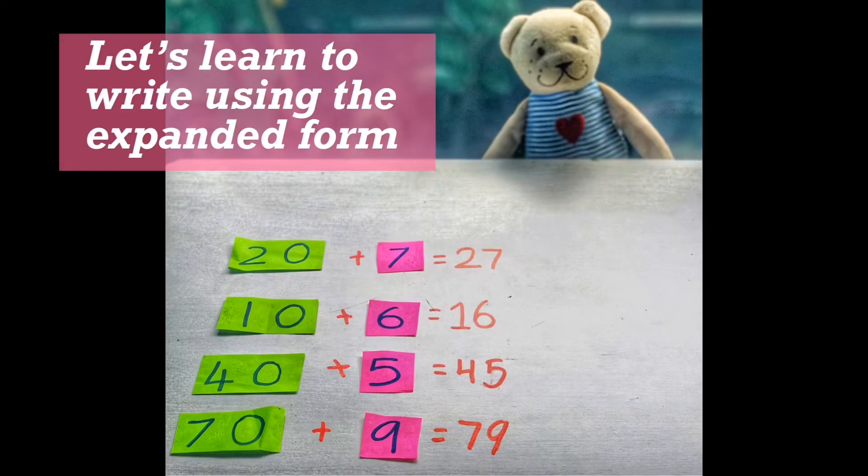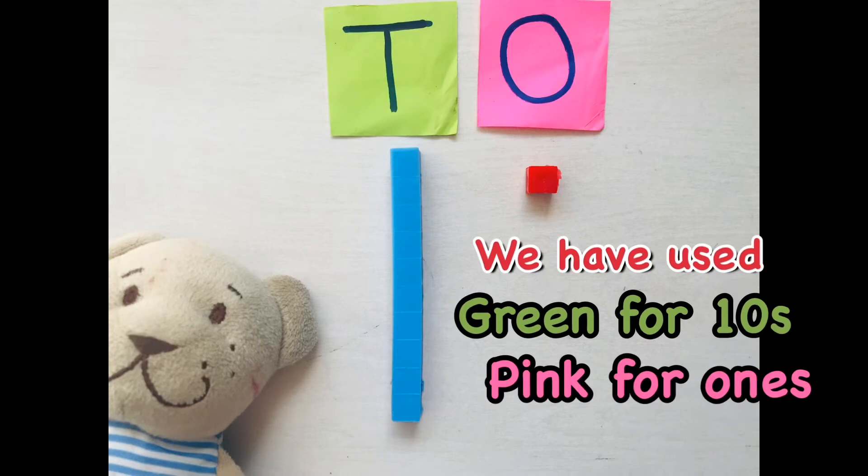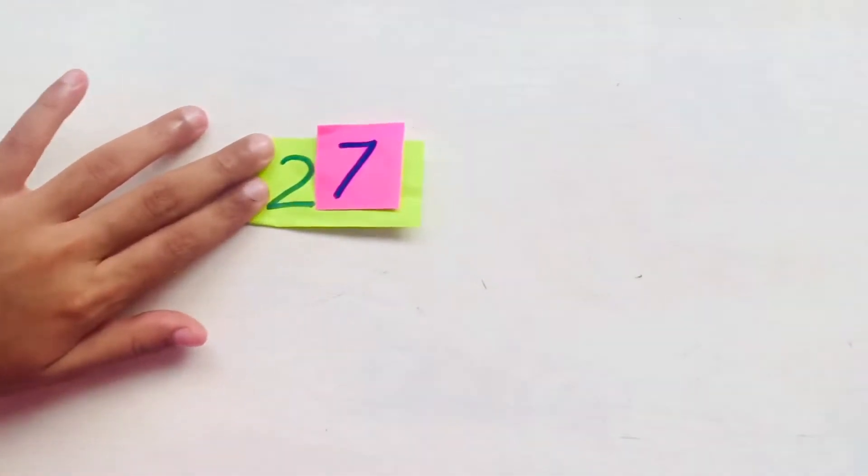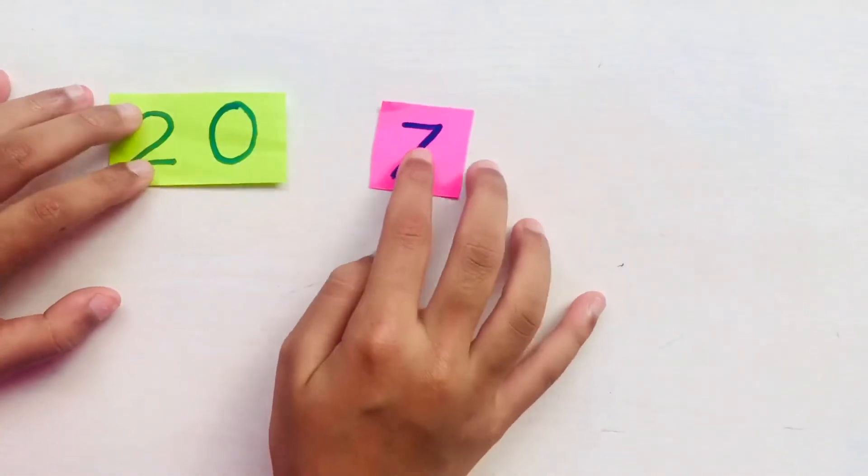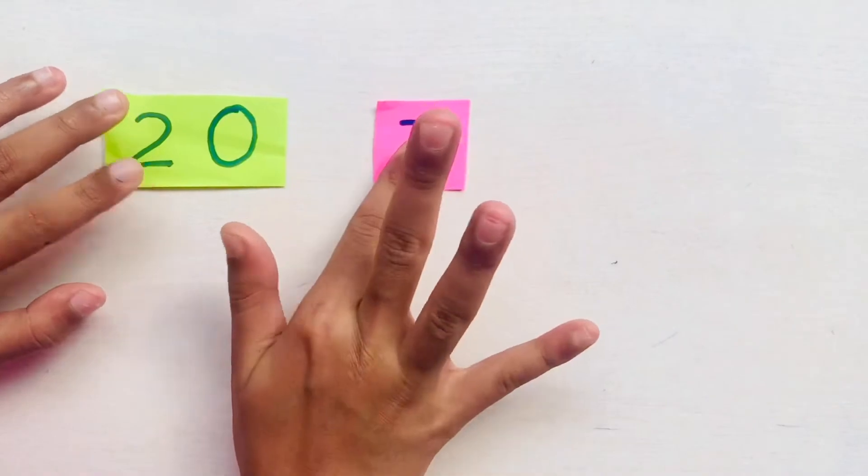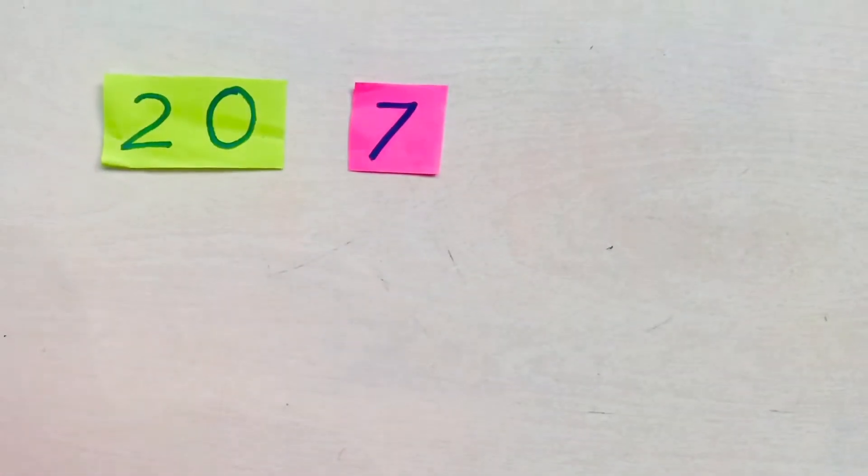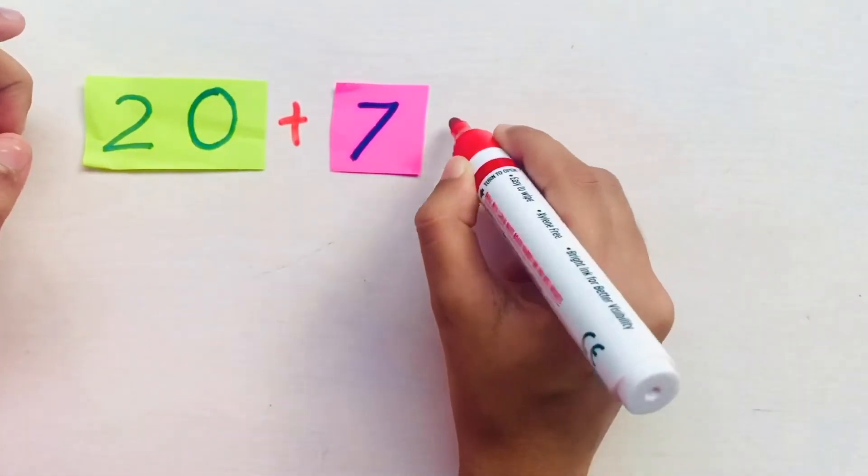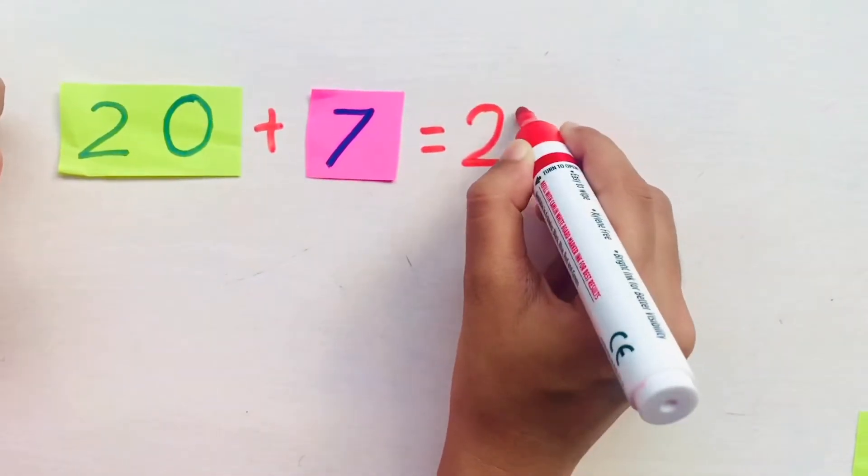Now let's learn how to write the quantities in the expanded form. The first number is 27. When we separate them it becomes 20, that is 2 tens and 7. Then we write an addition or a plus sign in between 20 and 7. 20 plus 7 makes 27.